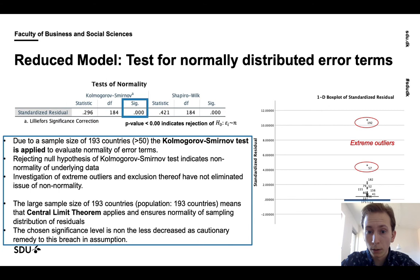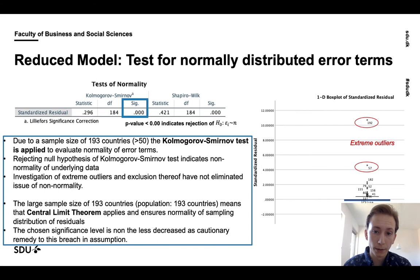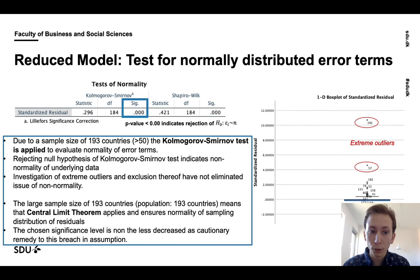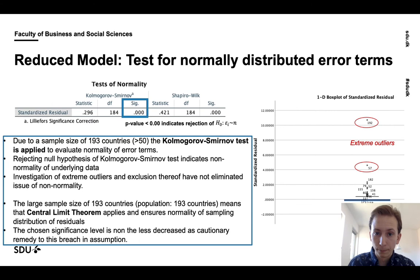Now we will have a look at the reduced model and test for the distribution of the error terms. Due to a sample size of 193 countries, which exceeds the number of 50, we apply a Kolmogorov-Smirnov test to evaluate the normality of the error terms. As indicated by a p-value of below zero, it rejects the null hypothesis and indicates that we have non-normal error terms. We investigated this by performing a box plot and found that observations 57 and 192 are very extreme outliers. However, also when excluding these, we would still have non-normal data according to Kolmogorov-Smirnov. We accept to continue with a slight breach in this assumption because we argue that the large sample size of 193 countries means that the central limit theorem applies.